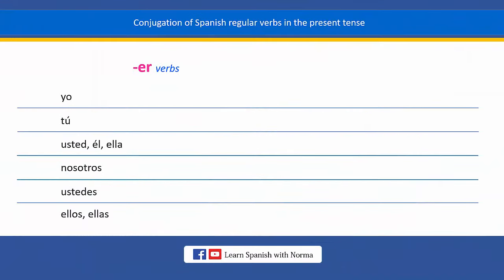The second group of Spanish regular verbs ends in ER. Remember that verbs that end in ER are the second largest group of regular verbs in Spanish. These are the endings we use to conjugate all Spanish regular verbs that end in ER. As you can see, each ending must agree with its corresponding subject pronoun. Now you know that in Spanish we conjugate all infinitive verbs by changing the endings.